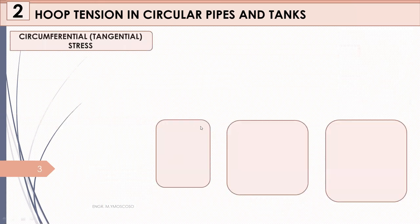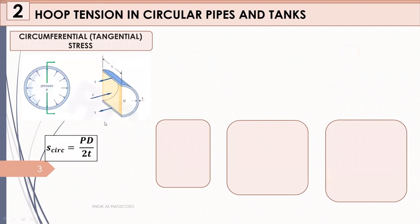Circumferential stress, also called tangential stress, is represented by the formula pd over 2t, where p is your pressure, d is your inner diameter, and t is the thickness of your circular pipes or tanks. Imagine a tank here filled with fluid or gas under pressure — it is subjected to a tensile force because when shearing occurs, tensile stress is produced.